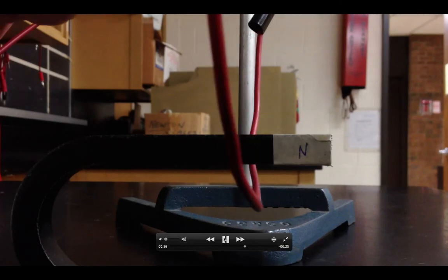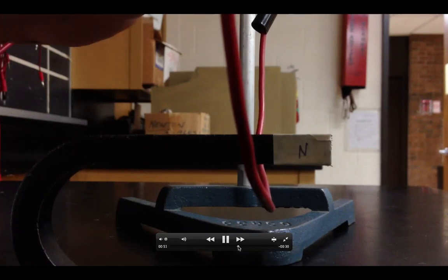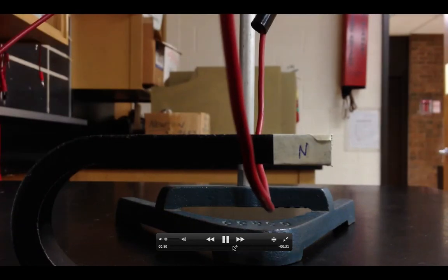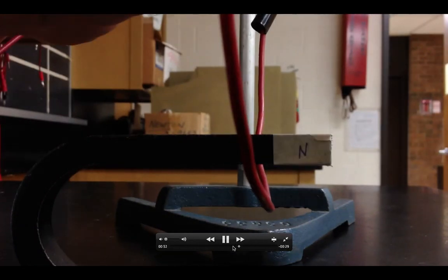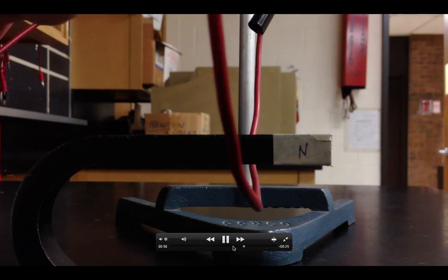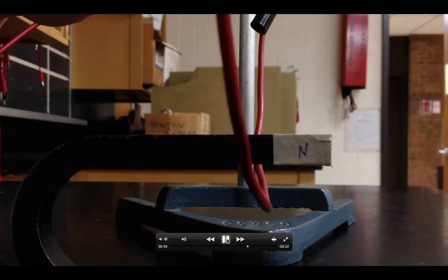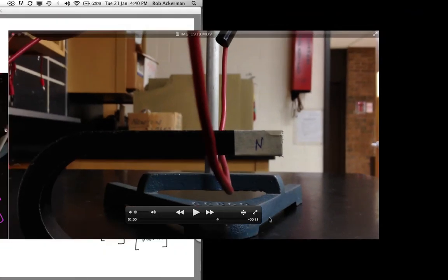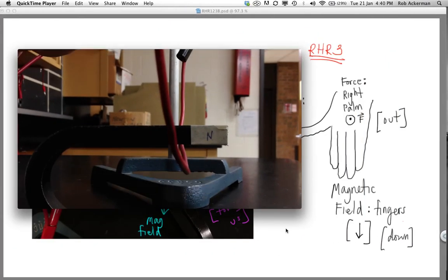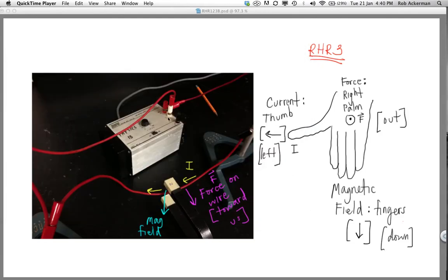There we go. Sorry folks. Having a lot of trouble here. Got to get a new computer. Okay. Turn on the power. And the wire moves left. Which is what you should have predicted. Because remember, the current would be, in this case, an X. The magnetic field is down. Your right palm should be pointing left. Alright folks. I hope that helps you to understand what's going on with right hand rule 1, 2, and 3. I'll see you back in class. Thanks for watching.